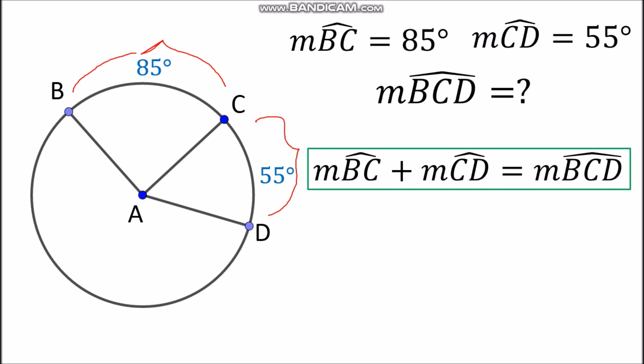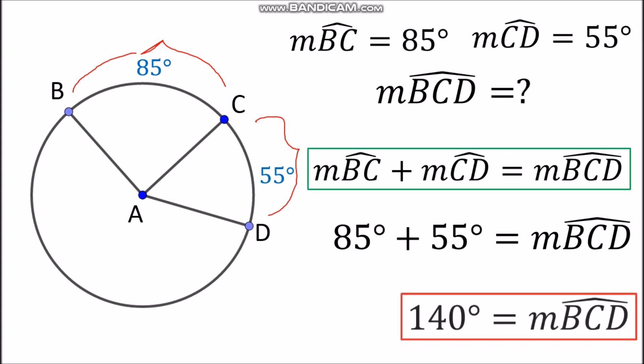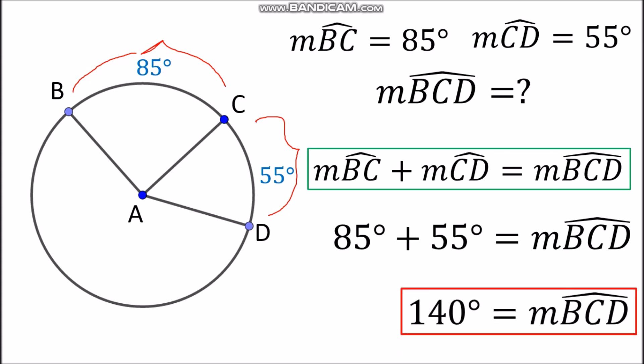We can say that the measurement of arc BC plus the measurement of arc CD is equal to the measurement of arc BCD. Now substituting all the values, 85 degrees plus 55 degrees, that will be equal to the measurement of arc BCD, which is 140 degrees.